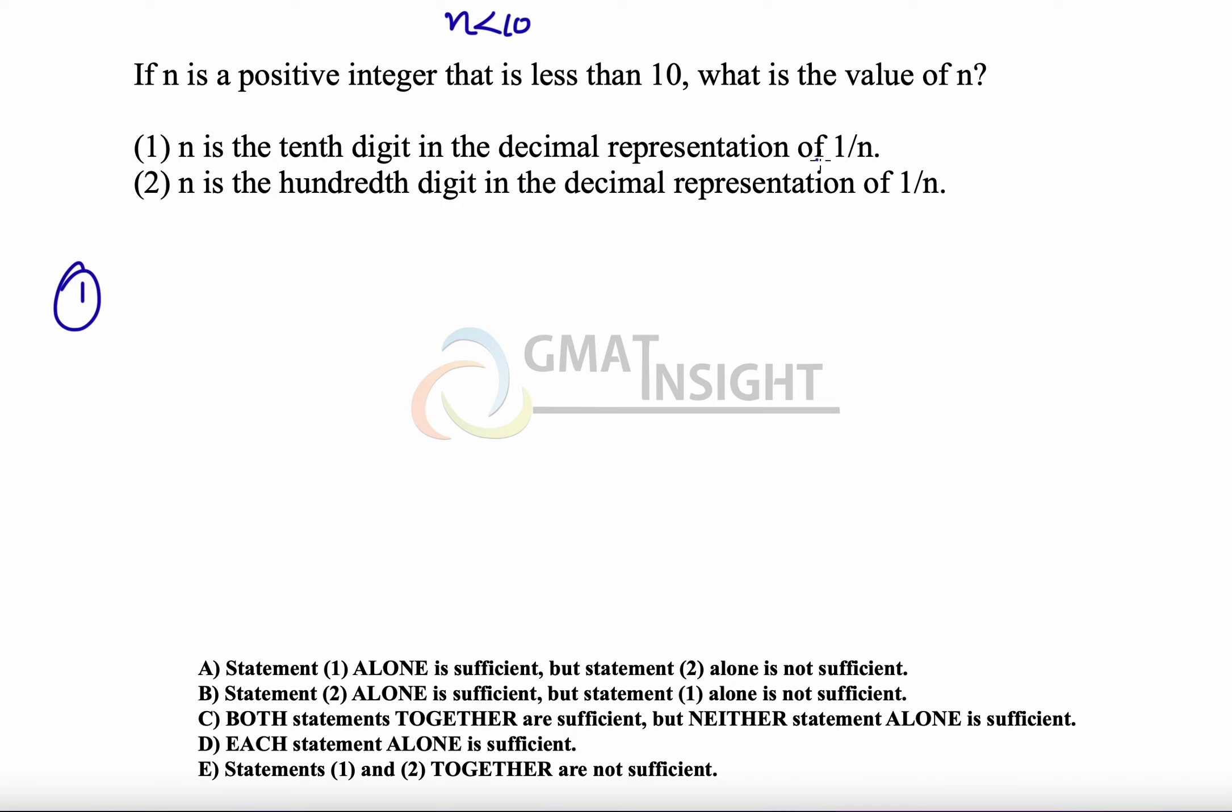Now, for this, we need to know several decimal representations of the value. For example, 1 upon 2 becomes 0.5, 1 upon 3 becomes 0.33, 1 upon 4 becomes 0.25, 1 upon 5 is 0.2, 1 upon 6 is 0.1666, 1 upon 7 becomes 0.1428, 1 upon 8 becomes 0.125, 1 upon 9 becomes 0.1111.